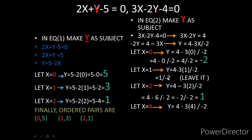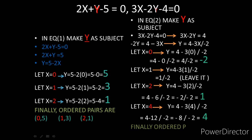For x = 4: y = (4 - 3×4) / (-2) = (4 - 12) / (-2) = (-8)/(-2) = 4. So the ordered pairs for equation 2 are: (0, -2), (2, 1), and (4, 4).